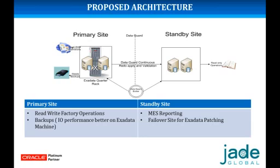This whole operation was done in two phases. First, the important step was completing the Exadata patching, so they switched over to the secondary site for a limited time until they finished Exadata patching. Then they switched back to the primary and set the standby site to read-only mode, where they continuously started running their reports. The primary site was then only supporting read-write factory operations in the proposed architecture, with RMAN backups kept on the same primary Exadata site due to better IO performance.